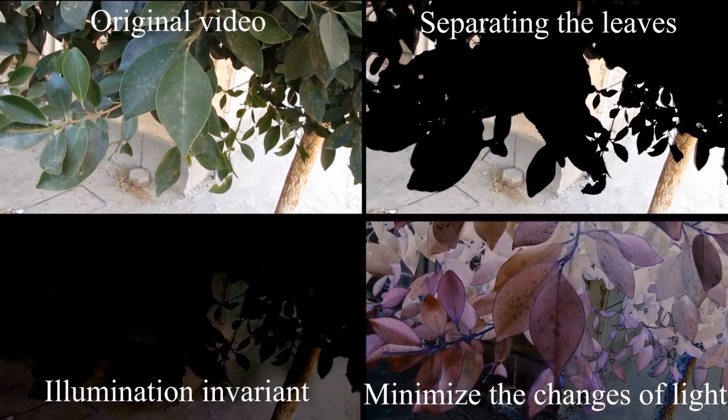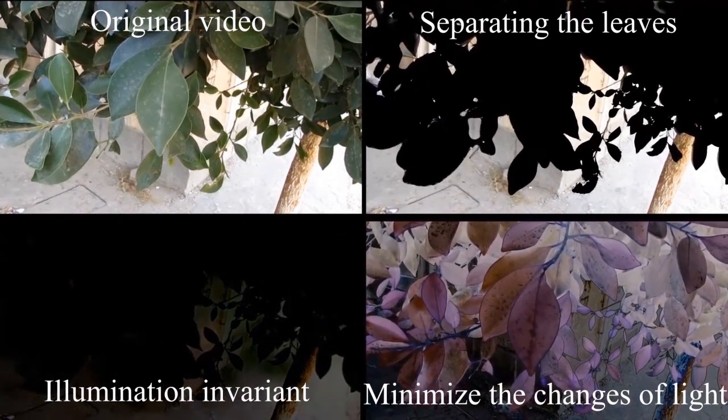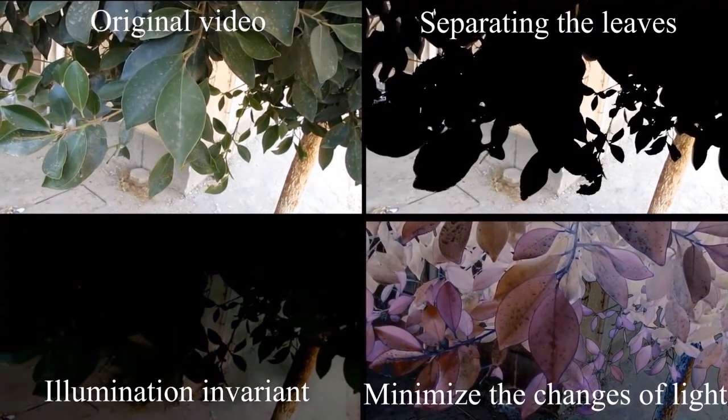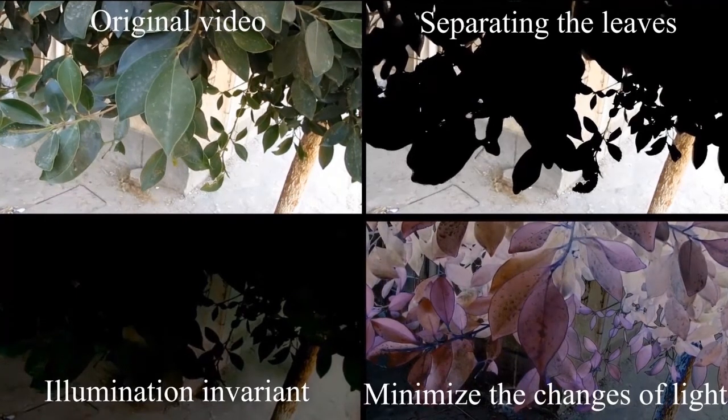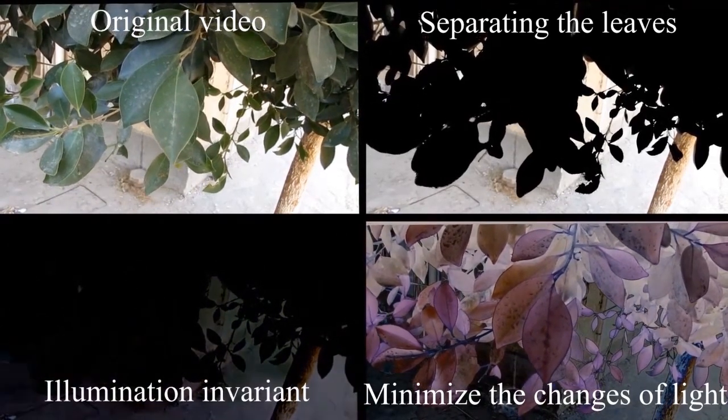Then, we generate an illumination-invariant version of the video. We eliminate the signal that represents the changes in the mean of the color change of the invariant version with time from the stabilized recorded frame.